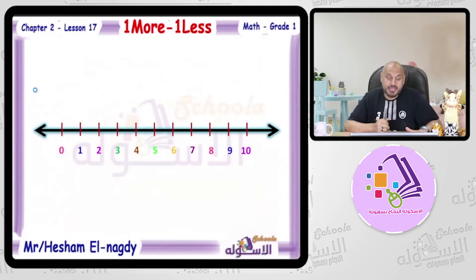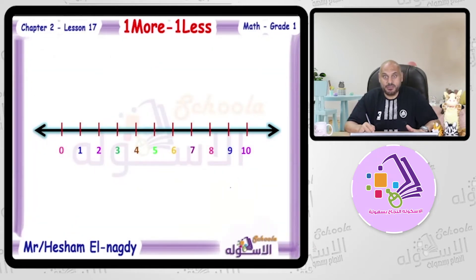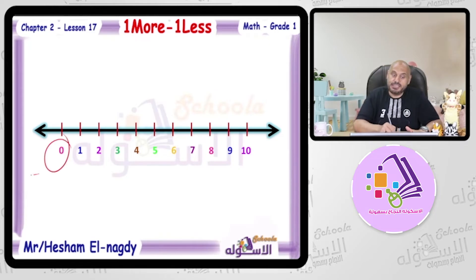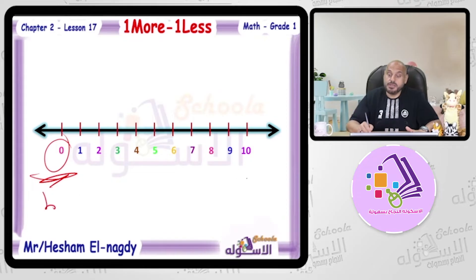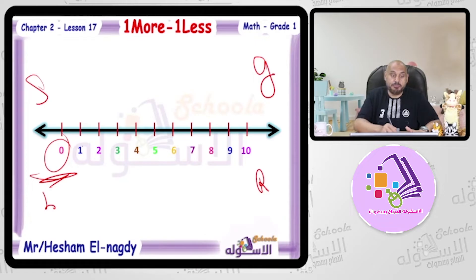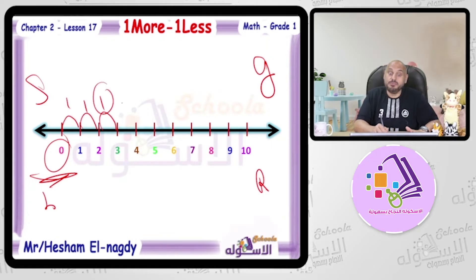One more or one less can be shown on a number line, where numbers are arranged from smallest to greatest, from left to right. On the number line: zero, one, two, three — moving forward means plus one, add one, one more.